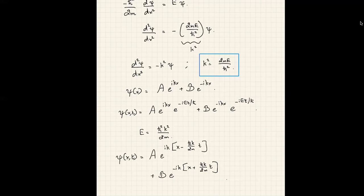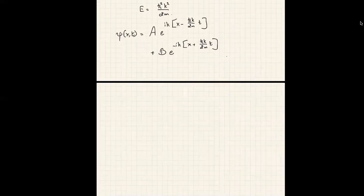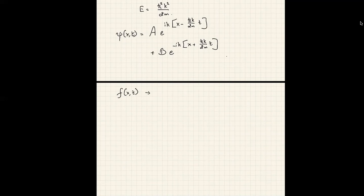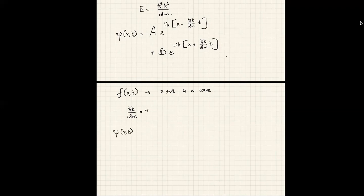Notice that this is a wave. From electrodynamics, any function of x and t that depends only through the combination x ± vt is a wave. Here we have Ae^(ik(x − ħk/2m · t)), so if we associate ħk/2m — which has dimensions of velocity v — we can write Ψ(x,t) = Ae^(ik(x−vt)) + Be^(−ik(x+vt)).